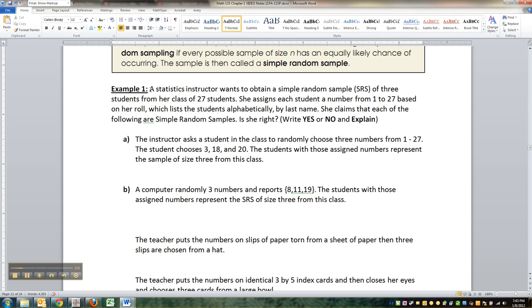A statistics instructor wants to obtain a simple random sample SRS of three students from her class of 27 students. She assigns each student a number from 1 to 27 based on her roll which lists the students alphabetically by last name. She claims that each of the following are simple random samples. Is she right? Yes or no? Now keep a couple things in mind here.